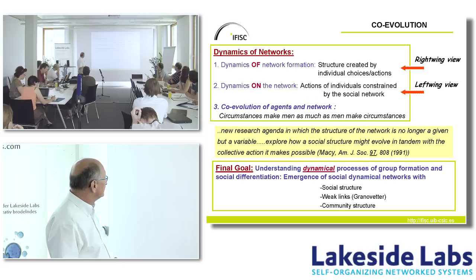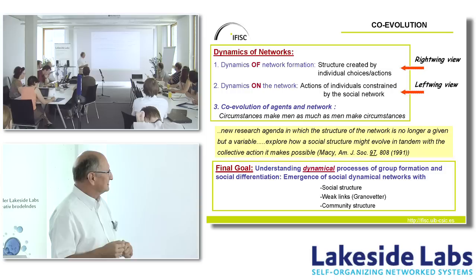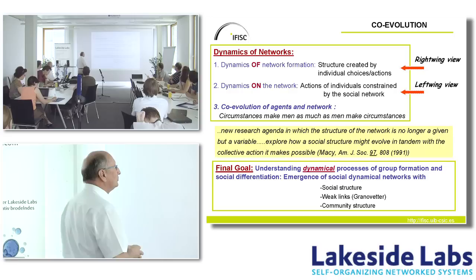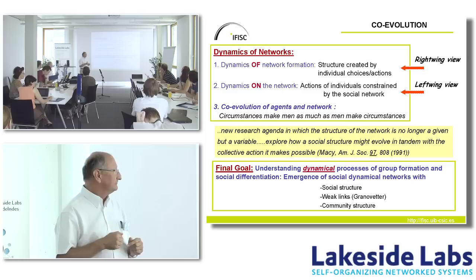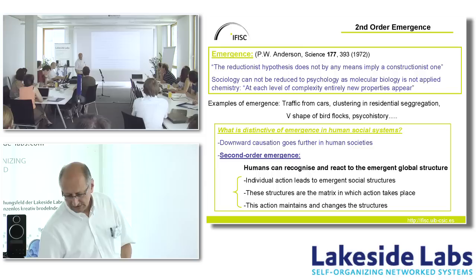Of course there is a third way, which is the co-evolution of agents and the network — to summarize in a sentence: circumstances make men as much as men make circumstances. The final goal is understanding dynamical processes of group formation and social differentiation, where the network evolves on the same timescale that agents are changing state.